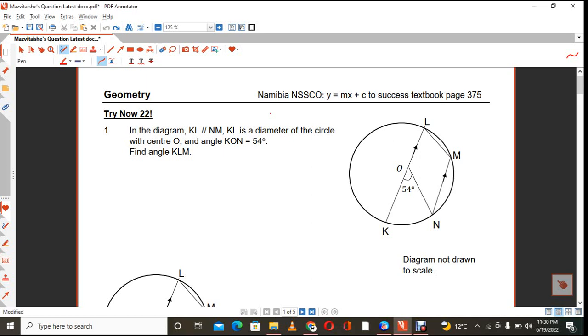So basically, what it is, is circle theorems. You have the diagram here, and it's not drawn to scale, so do not use things to measure, like protractors and stuff like that. You need to know your angle theorems. Now, the diagram shows that the distance KL is parallel to the distance NM, as you can see, indicated by these arrows here. And then also, the angle KON, this angle is 54 degrees. And then you are asked to find angle KLM, that is this angle that you are supposed to find.